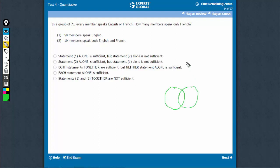The group is of 70. In all, there are 70 people, out of which everybody speaks English or French. So that means there's nobody outside, 0.